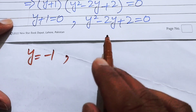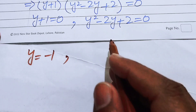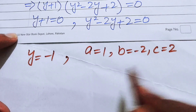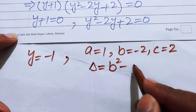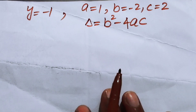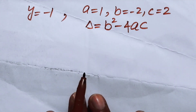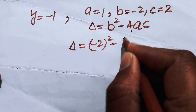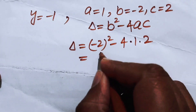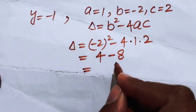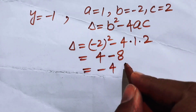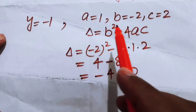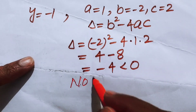We use the discriminant formula to check for real roots. With a equals 1, b equals minus 2, and c equals 2, the discriminant is delta equals b squared minus 4ac. Substituting: delta equals minus 2 squared minus 4 times 1 times 2, which gives 4 minus 8 equals minus 4. Since delta is less than 0, this quadratic equation has no real roots.